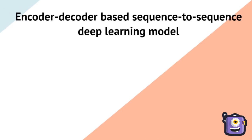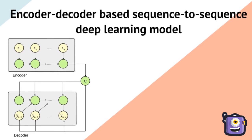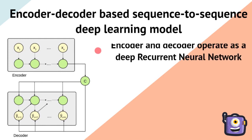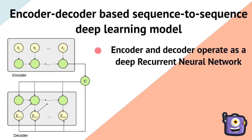To address this problem we use an encoder-decoder-based sequence-to-sequence deep learning model, which consists of two components: an encoder and a decoder, each of which is an RNN.